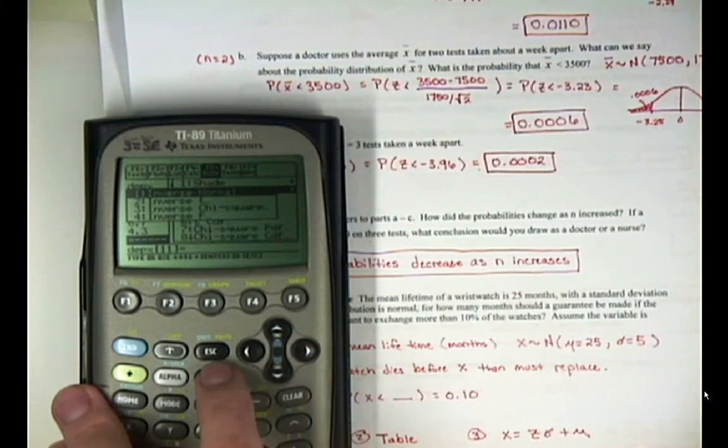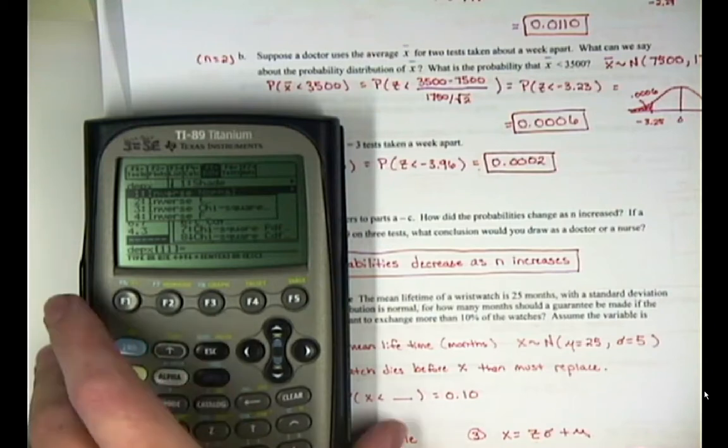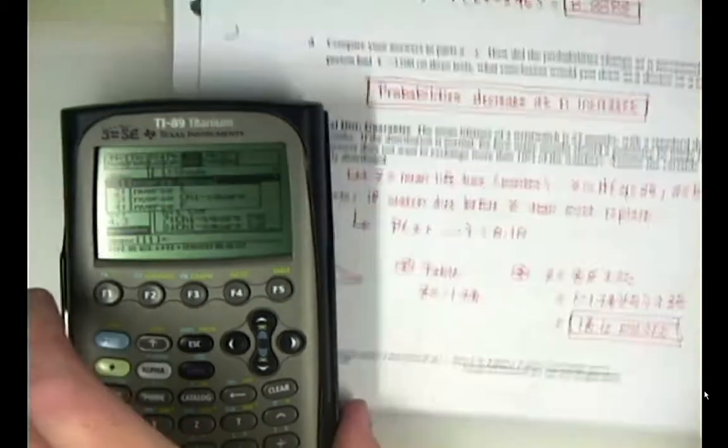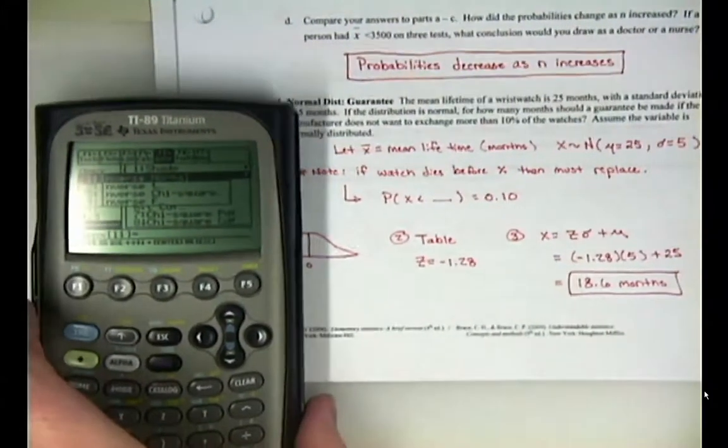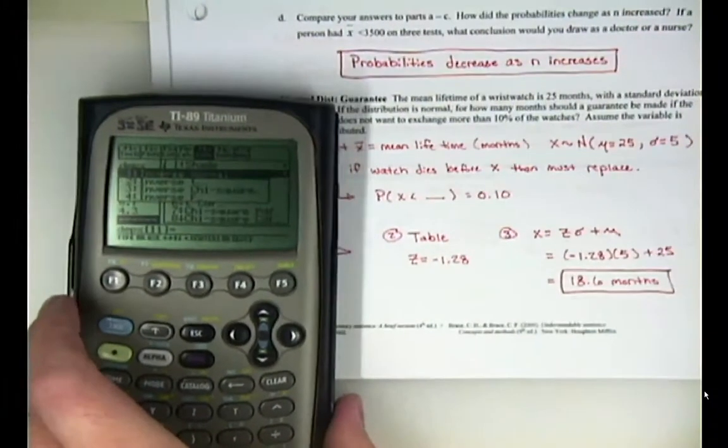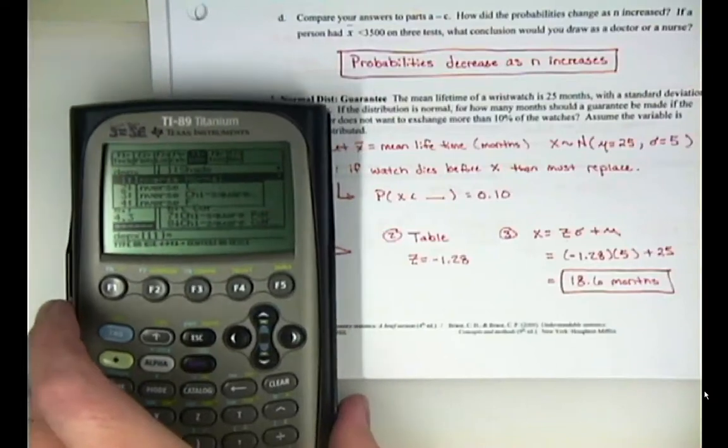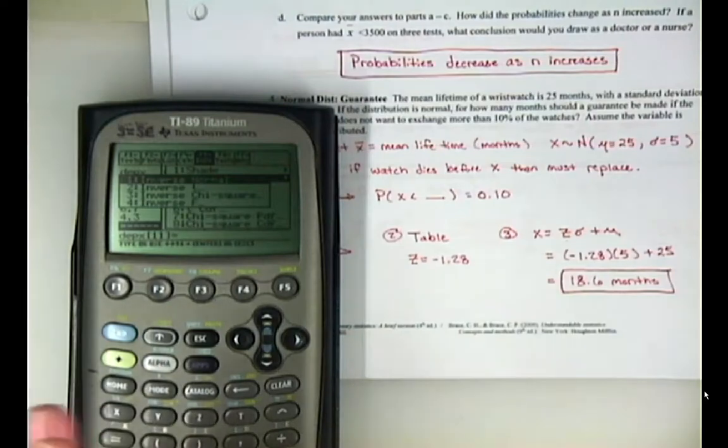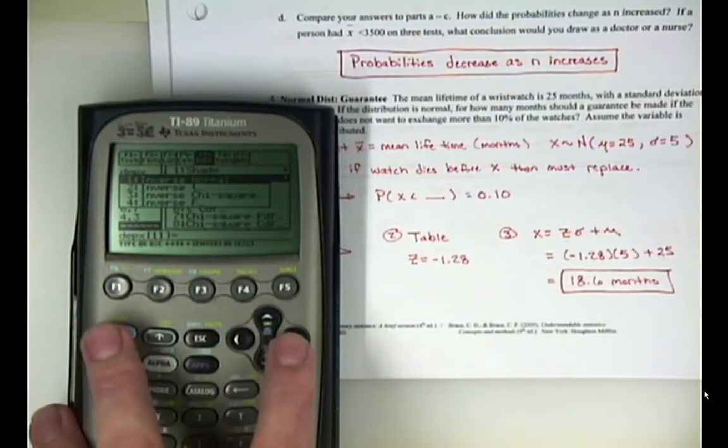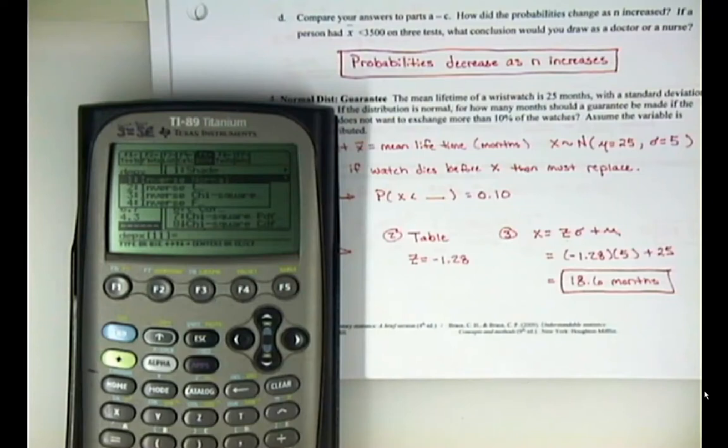Now, we use this when we have a probability and we want a raw score from it. So, for example, with guarantee problems like on this worksheet, it's a normal distribution and it's a guarantee problem, and they tell us that X is less than some number which equals 10%. 10% of the graph is shaded, right? It's a very common setup, and it's called the inverse normal.